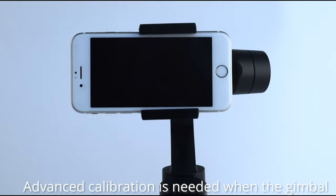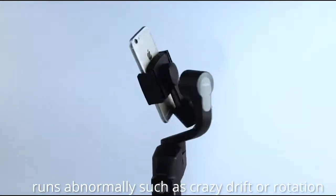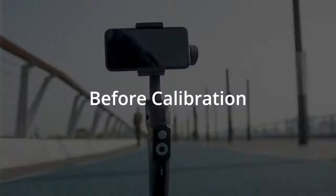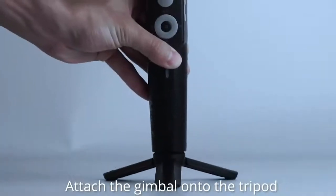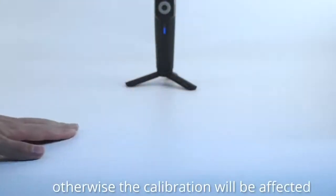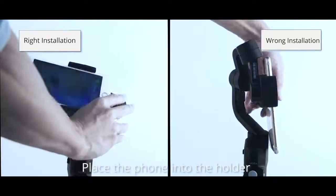Advanced calibration is needed when the gimbal runs abnormally, such as crazy drift or rotation. Before calibration, attach the gimbal onto the tripod and place it on a flat surface. The surface must be flat, otherwise the calibration will be affected.